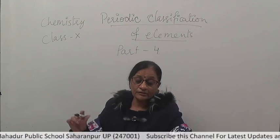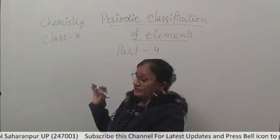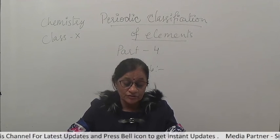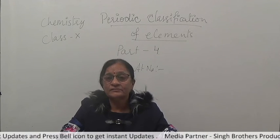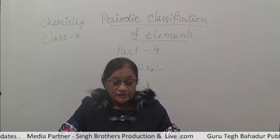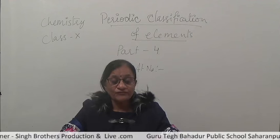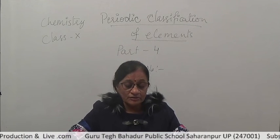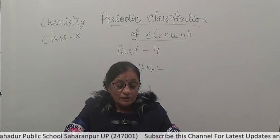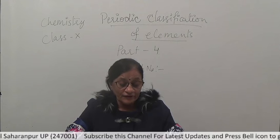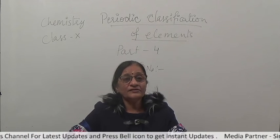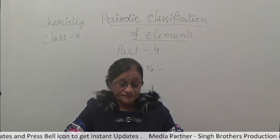First, we will talk about atomic number. Atomic number is the number of protons in the nucleus of an atom, as we discussed in class 9. This number increases by 1 when going from one element to another. So when elements are arranged in order of increasing atomic number, it gives a proper classification and forms the basis of the modern periodic table.